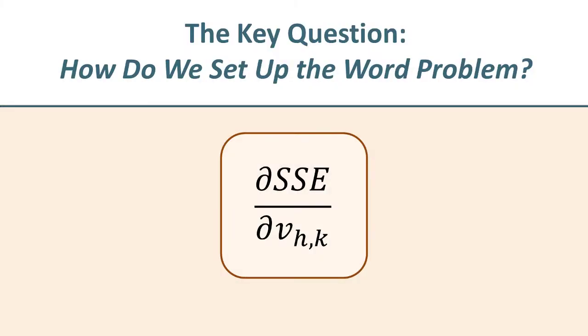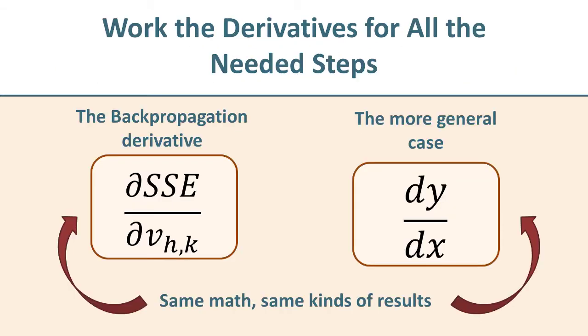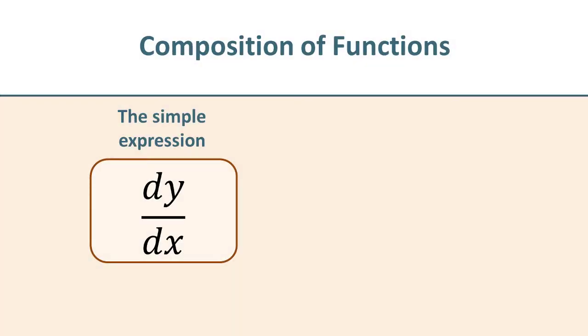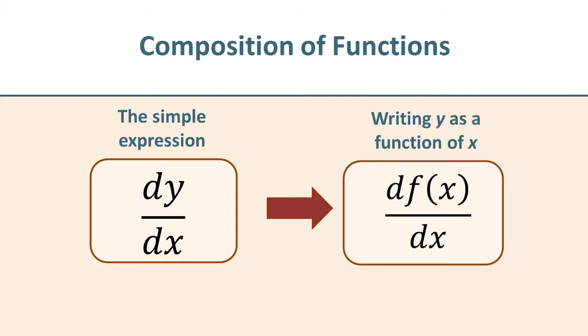So back to our work. We're after that dependence of the sum squared error on a connection weight. Just remember that this Greek partial notation is the same kind of mathematics as using a straightforward derivative. I went through that a little bit more in the previous video. So we're going to start with dy dx.